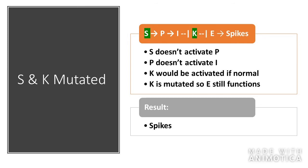For an S and K mutation, S is not able to activate P, which then means P does not activate I. K is therefore not inhibited, but because we have a mutation in K, E still functions and we have spikes.